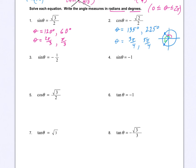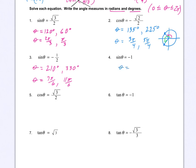Sine equal to negative one half: where is the y-coordinate equal to negative one half? At 210 degrees — that's quadrant three — and 330 degrees, which is quadrant four. In radians that's 7π/6 and 11π/6. And where is sine equal to negative 1? There's only one point: theta equals 270 degrees, or 3π/2 in radians.